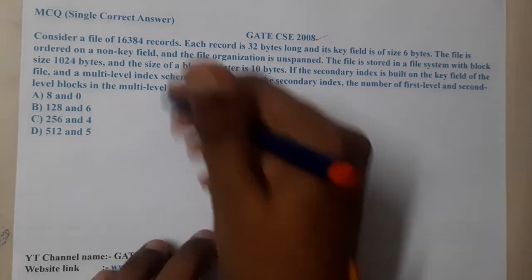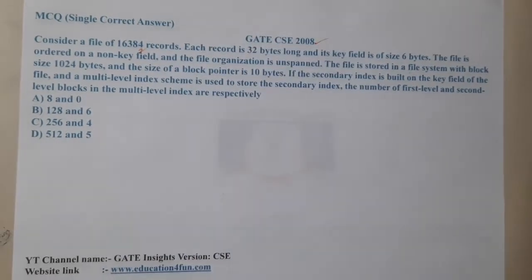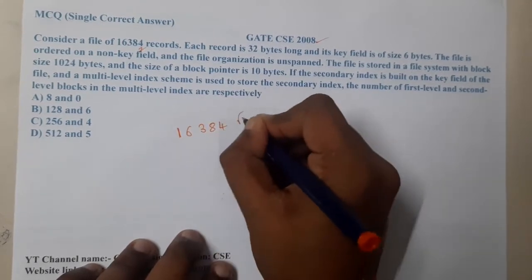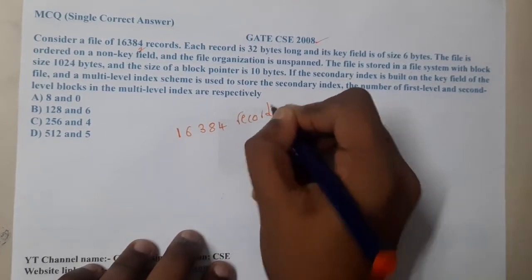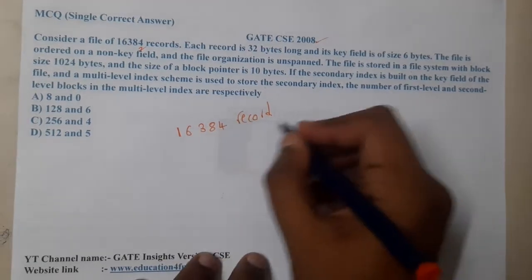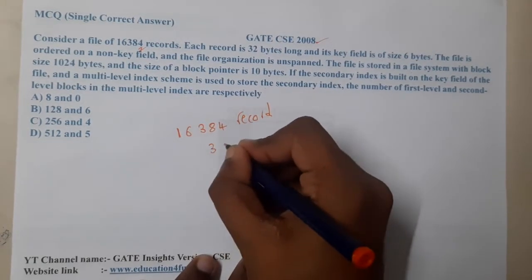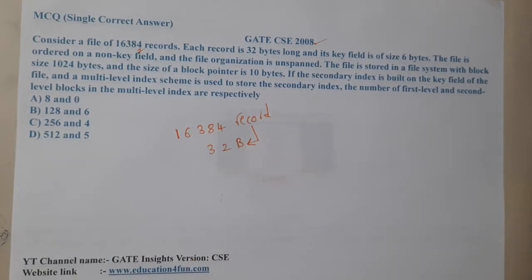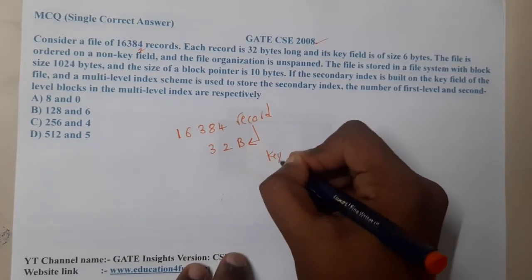The given question is: consider a file which is having 16,384 records. Each record is of size 32 bytes.